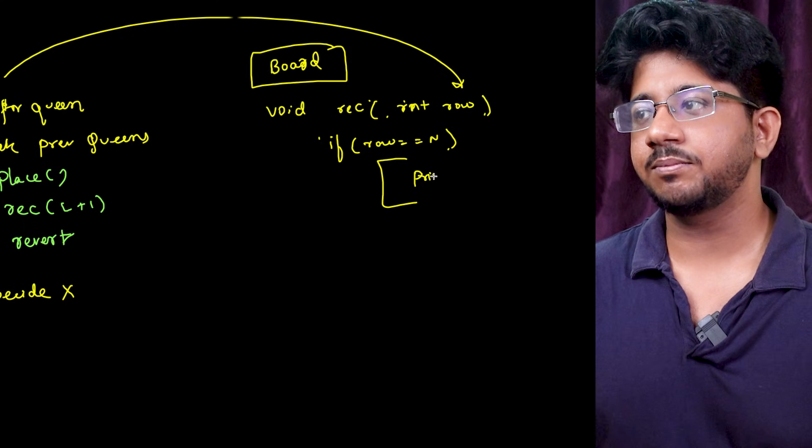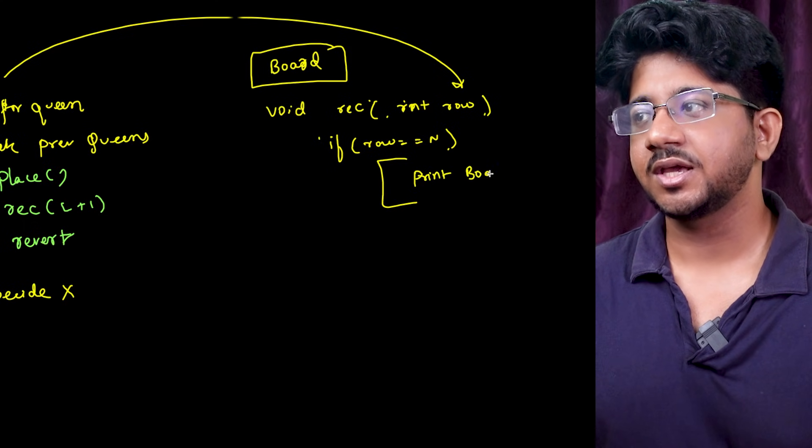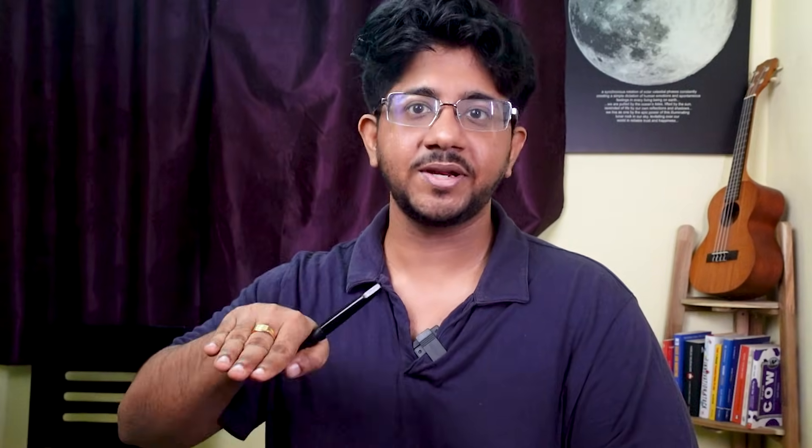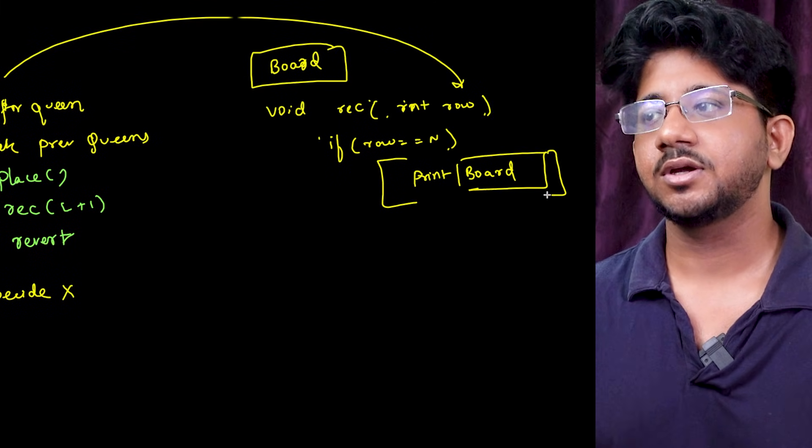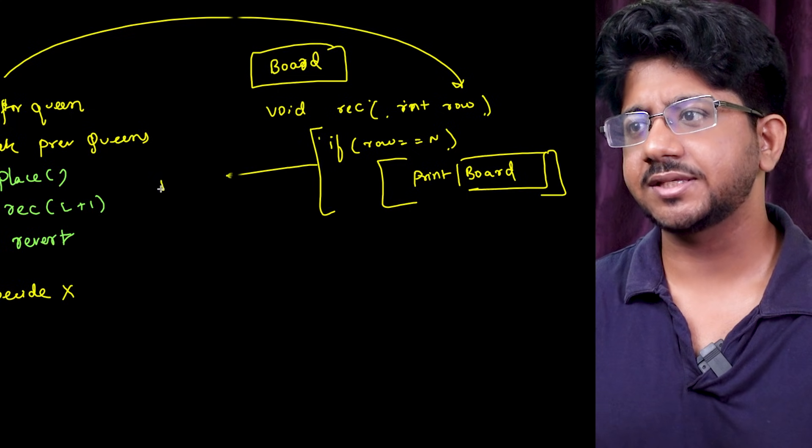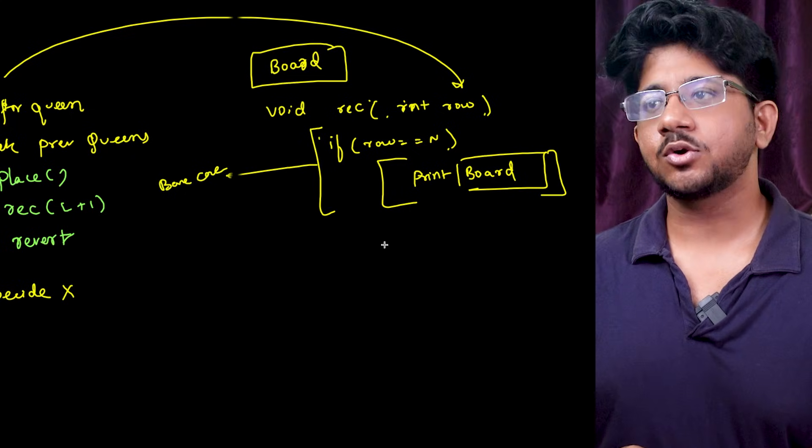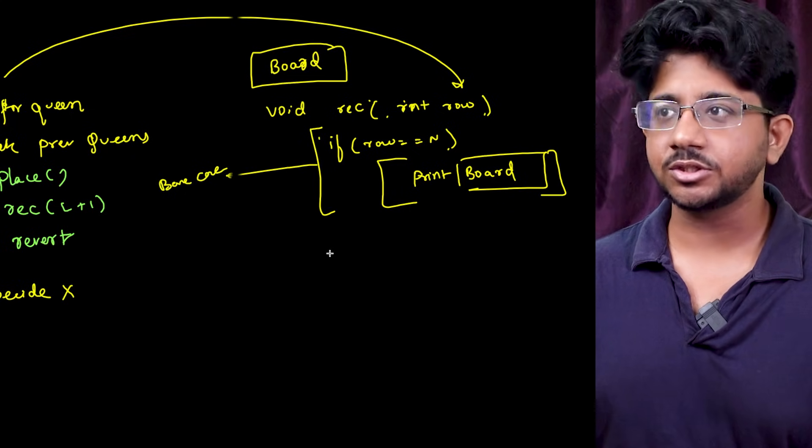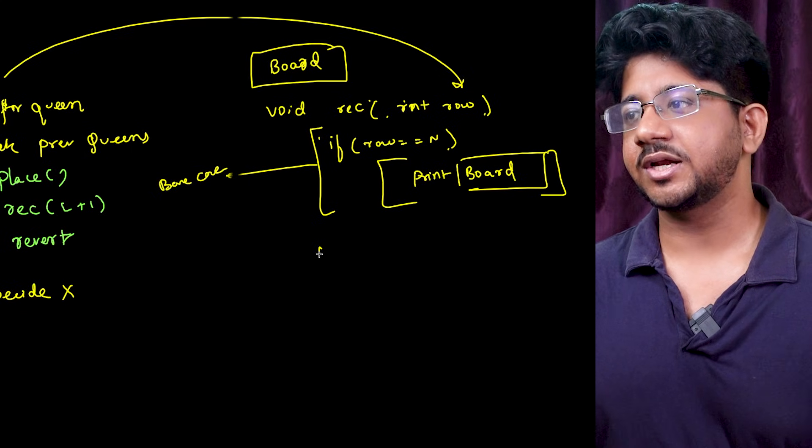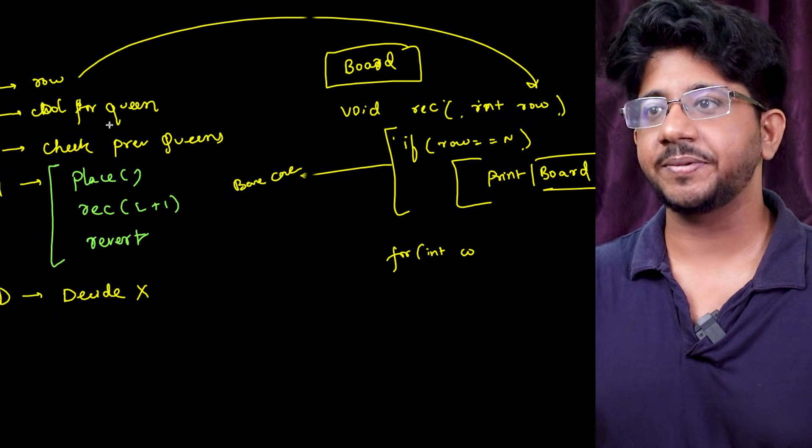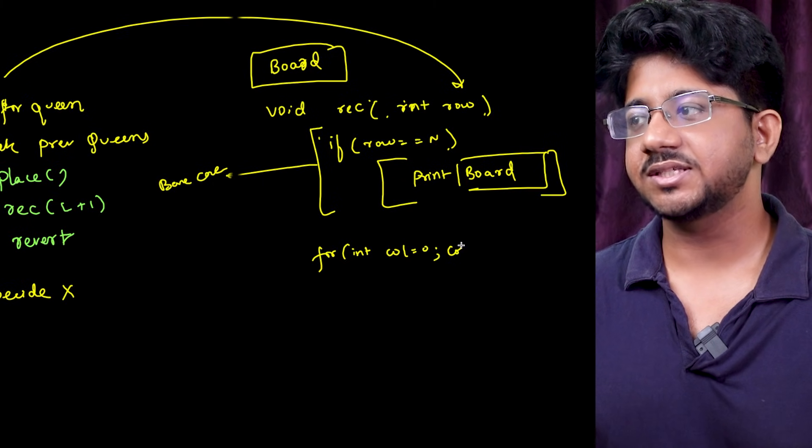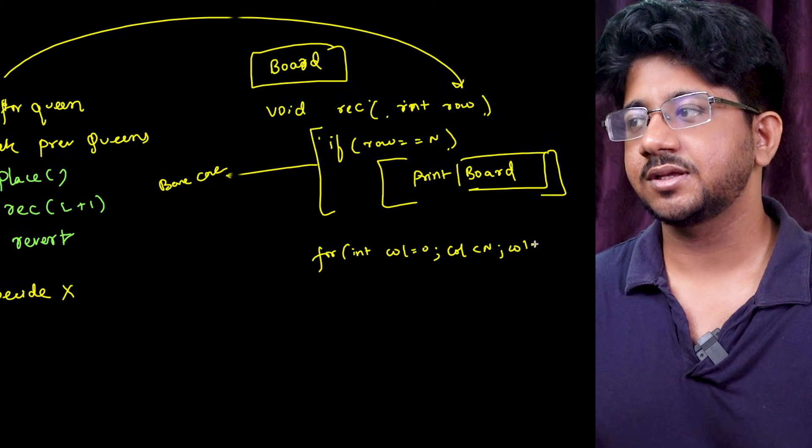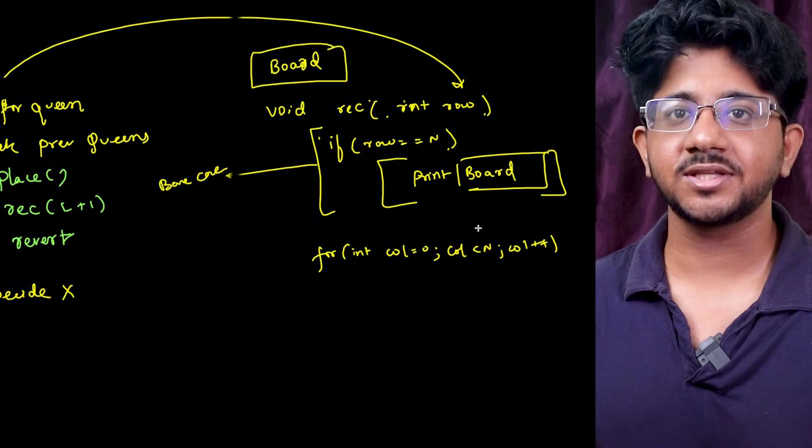You can print the board to print a solution because if you placed n queens and you have reached the nth row 0 1 2 3 up till n minus 1 you have placed nth row you are reaching. That means you can print the board and that's a valid solution. This is nothing but your base case. Now once you do this you can go to the next part which is enumeration of choices and what you can do is you can write for integer column here. The column where you are placing the queen is your choice. So for column equal to 0 column is less than n column plus plus right. This is basically going through all the choices in that level.